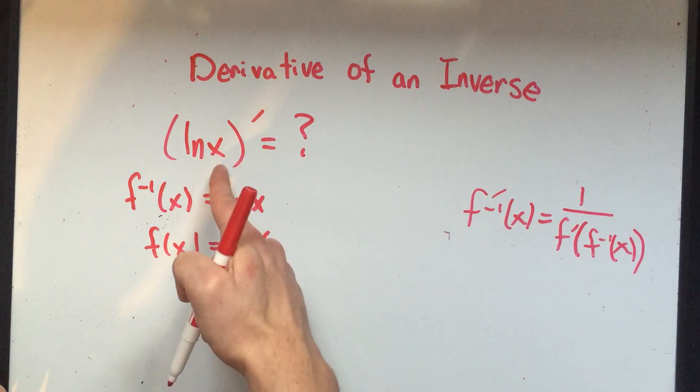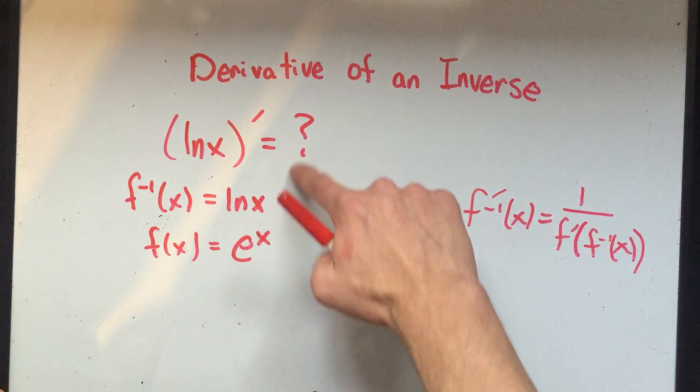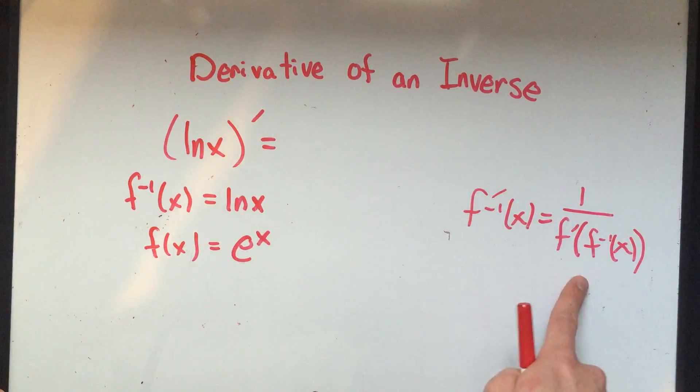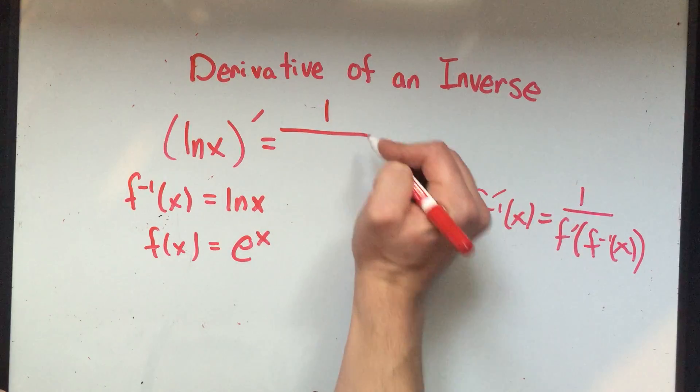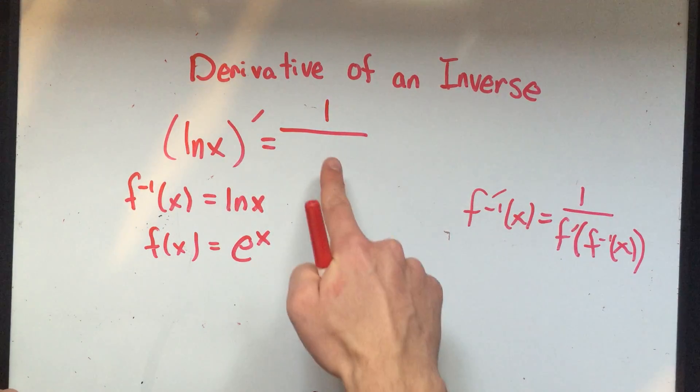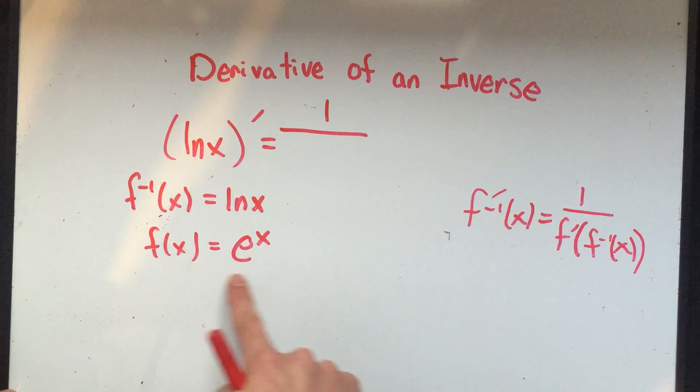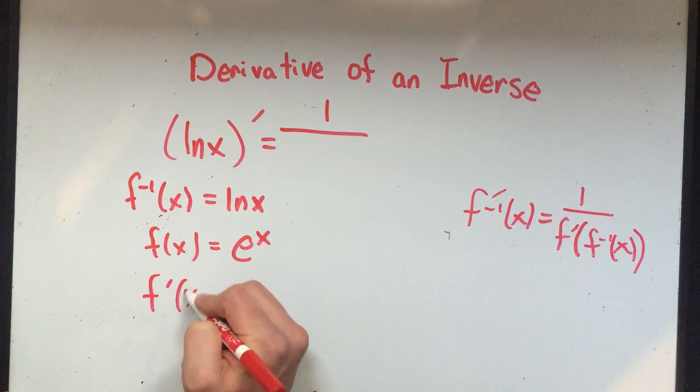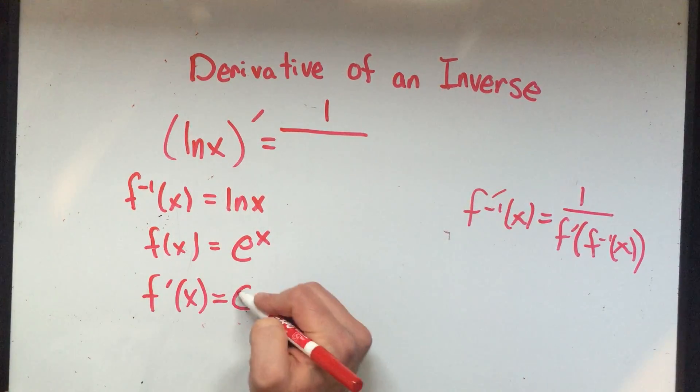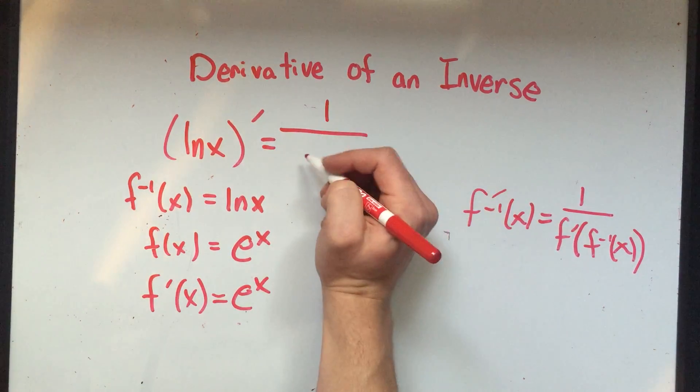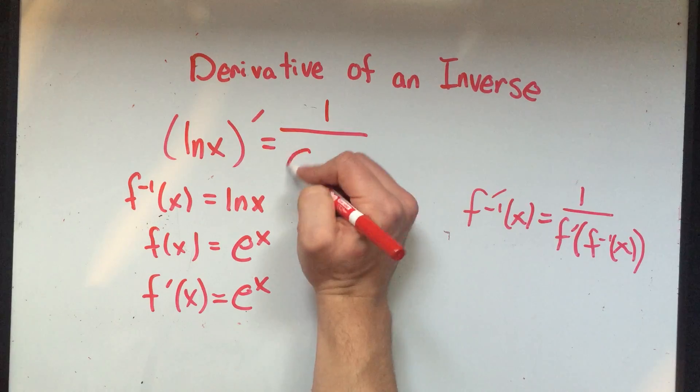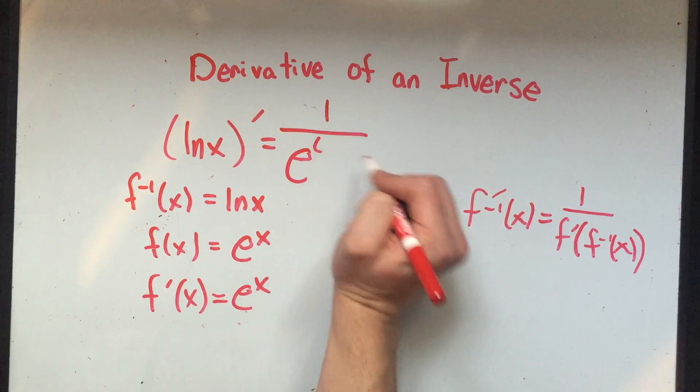That means that the derivative of ln of x, if I follow this formula, is 1 over f prime. So I've got to go here - what's the derivative of e to the x? Well, the derivative of e to the x is e to the x.